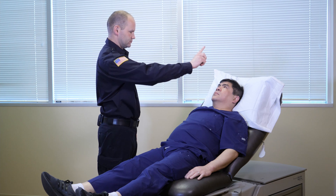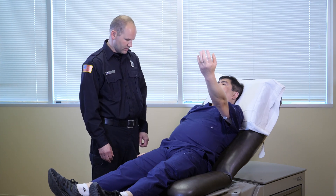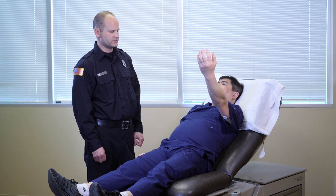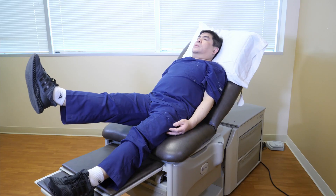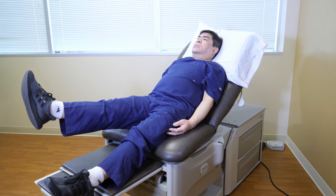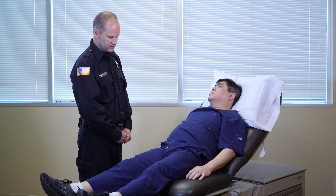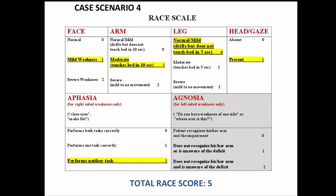Case 4: The examiner assesses smile, gaze following, and arm hold. Aphasia testing is performed — the patient is asked to close their eyes and make a fist. RACE scale score is five. Aphasia was tested this time because the weakness is on the right side.